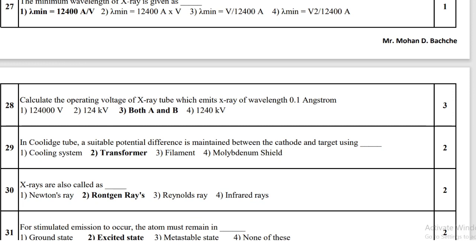Calculate the operating voltage of an x-ray tube which emits x-rays of wavelength 0.1 angstrom. The answer is 124,000,000 volt, which equals 124 kV.